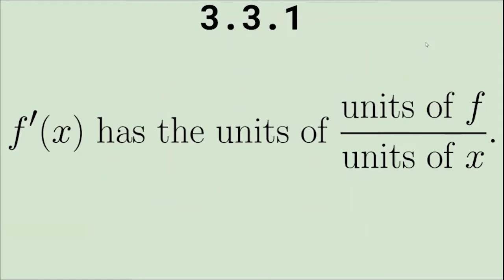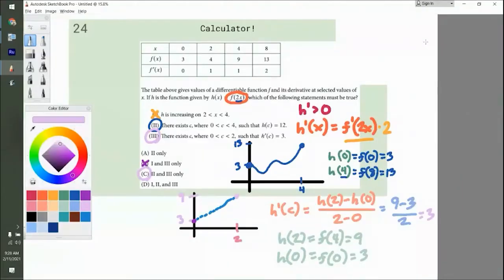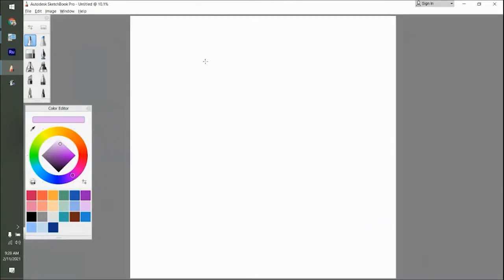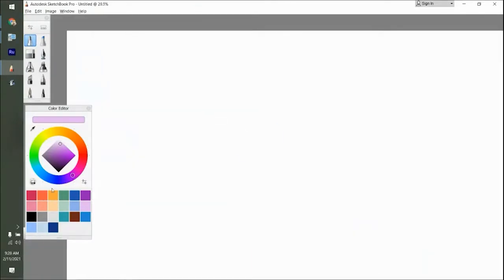So if it's f prime of x, you take whatever the units of f is, just regular f, not f prime, and you divide it by whatever the units of x is. This kind of makes sense in physics. And that's probably the best way of looking at this. One of the best ways of looking at the units is, so f prime, the units for f prime would be whatever the f units are divided by whatever the units of x are.